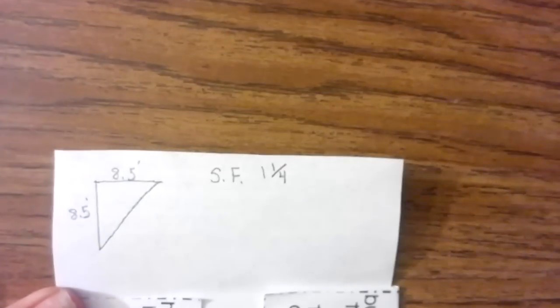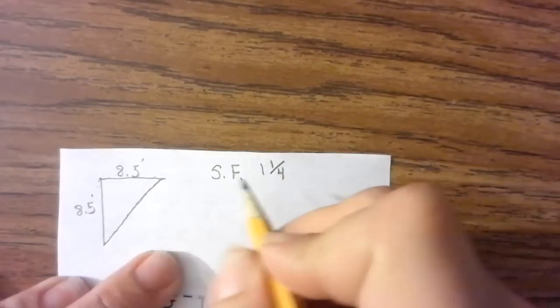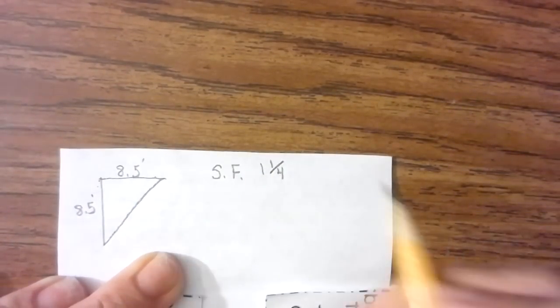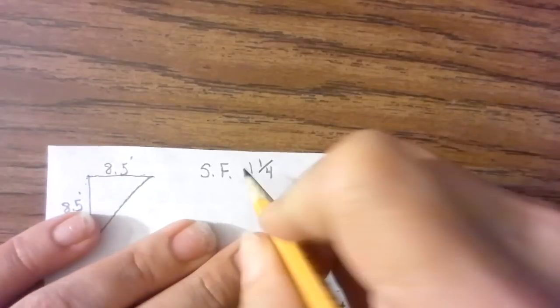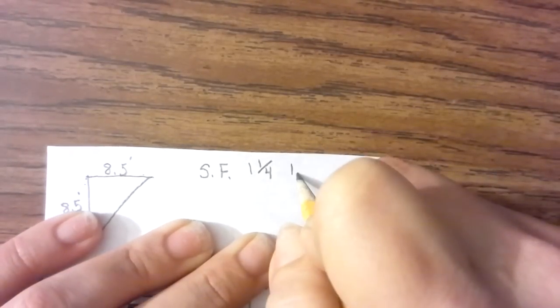By a scale factor of 1 and 1/4. Now I have a decimal here and a fraction here. I have a fraction here and a decimal here, so I'm going to go ahead and turn that fraction into a decimal.